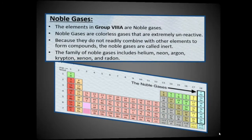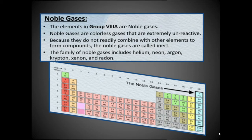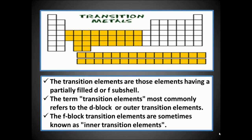Noble gases: the elements in Group 8A are noble gases. Noble gases are colorless gases that are extremely unreactive because they do not readily combine with other elements to form compounds. The noble gases are also called inert gases or inert elements. The family of noble gases includes helium, neon, argon, krypton, xenon, and radon.